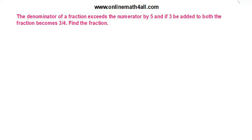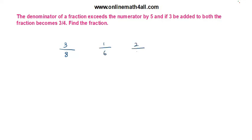The first piece of information is: the denominator exceeds the numerator by 5. For example, if the numerator is 3, then the denominator will be 8. If the numerator is 1, the denominator will be 6; if the numerator is 2, the denominator will be 7, because the denominator exceeds the numerator by 5.